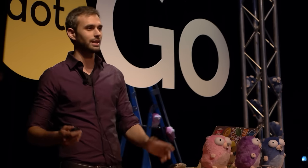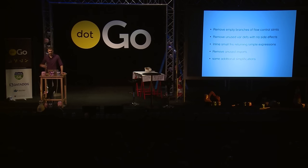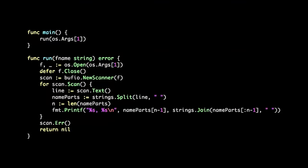So I figured we can reuse some of the optimization techniques used in compilers — write some passes over the AST to simplify the code further. We can remove empty branches of flow control statements, remove unused variables and inline small functions, remove unused imports so it actually compiles, and other simplifications as well. And what you get back is a program that, stripped of all its incidental complexity, is not really complex at all. It's a program that reads names from a file and prints them out — last name, comma first. All of the incidental complexity made it seem difficult, but it isn't.